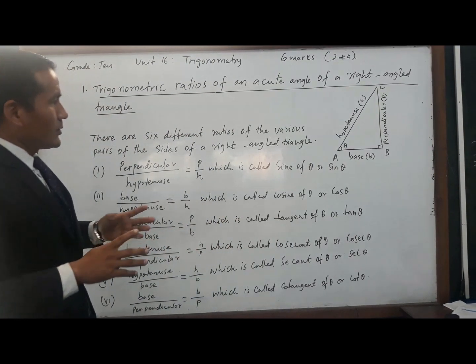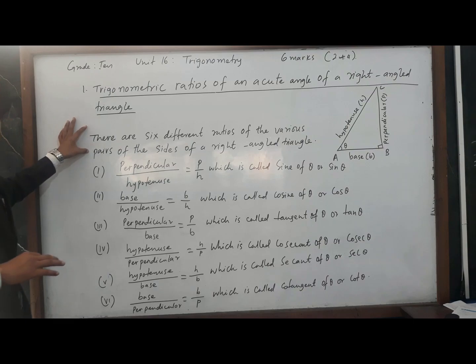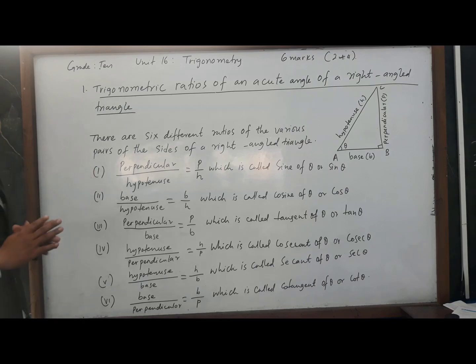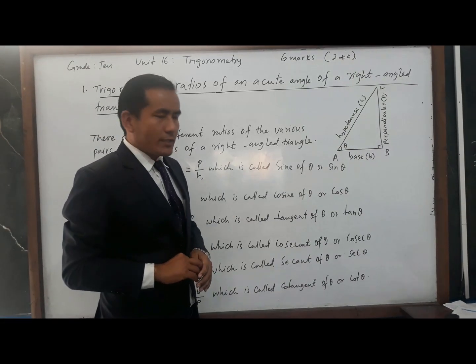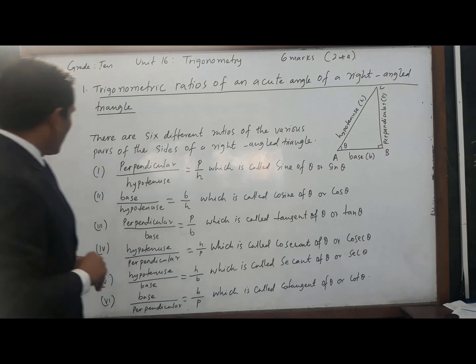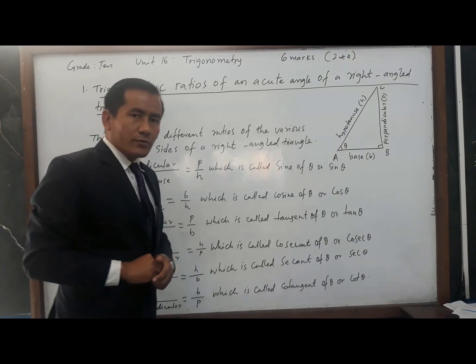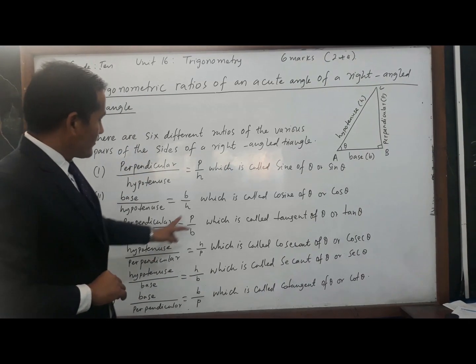There are six different ratios of the various pairs of sides of a right angle triangle. For example, if I take perpendicular by hypotenuse, which is called sine of theta, that is sine theta. Base by hypotenuse, which is called cosine of theta, cos theta.